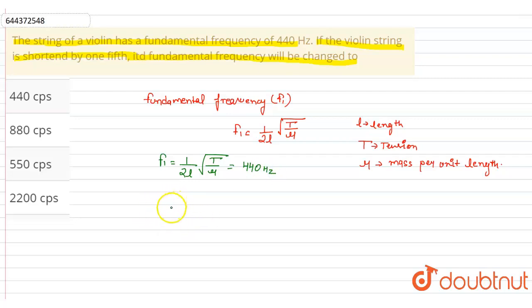Now we have to calculate when length is shortened by one-fifth, means L final is equal to L by 5. So let's calculate.